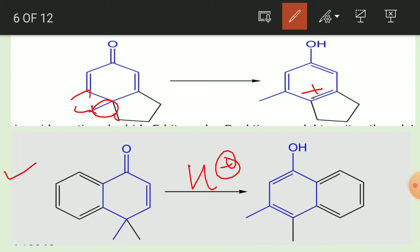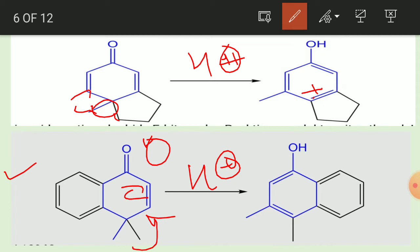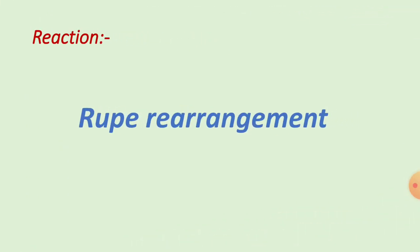For the second application example, the same H⁺ conditions apply. First, protonation occurs, then carbocation formation. In the next step, one methyl group shifts to the carbon position to form the stable tertiary carbocation. The last step is deprotonation and formation of the product.